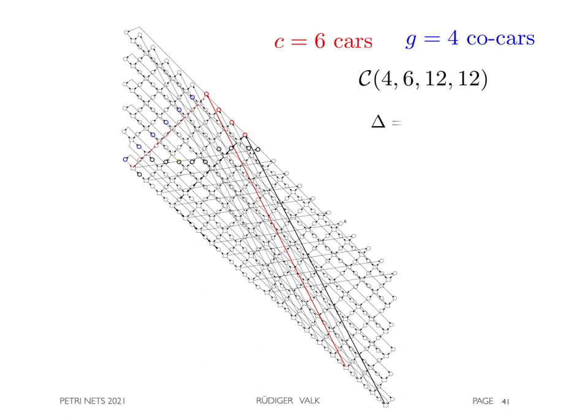Therefore, in the paper the cycloid for 6 cars and 4 co-cars was presented, and the GCD is 2, as well as the f-factor.